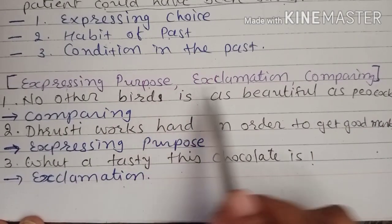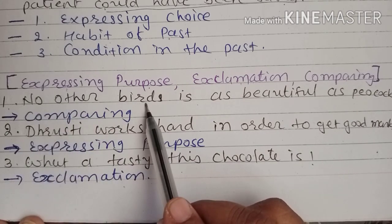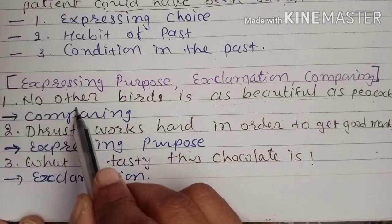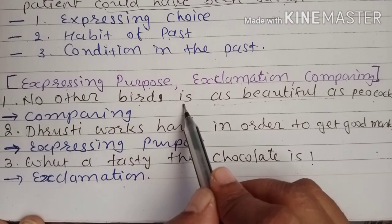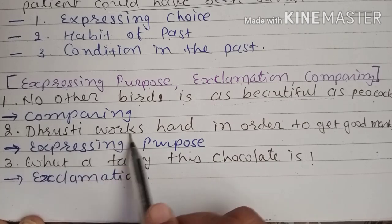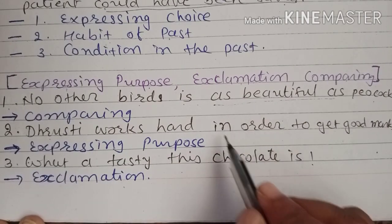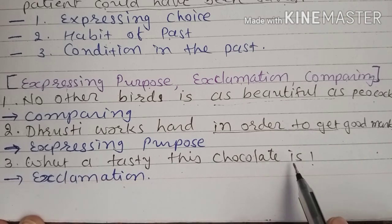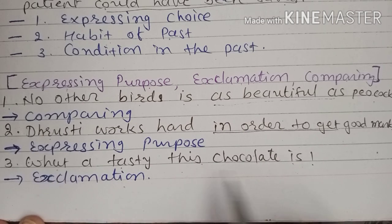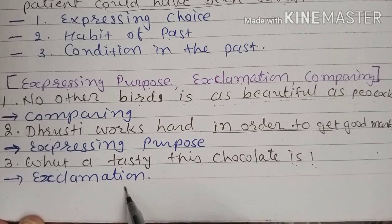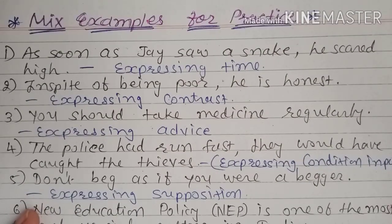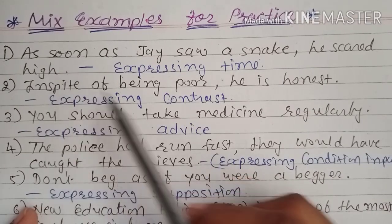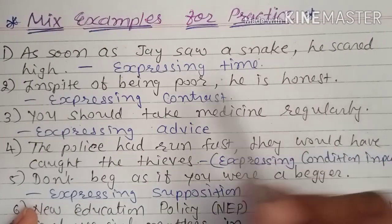Expressing purpose: 'The student works hard in order to get good marks.' The keyword 'in order to' shows purpose. Expressing comparison: 'No other bird is as beautiful as a peacock.' The keyword 'as... as' shows comparing. Expressing time: 'As soon as Jay saw a snake, he was scared.' The keyword 'as soon as' expresses time.